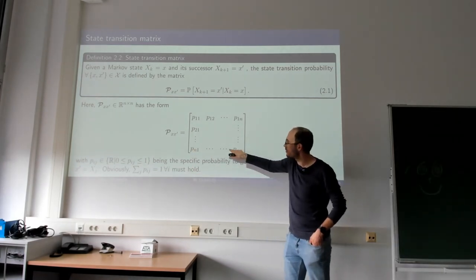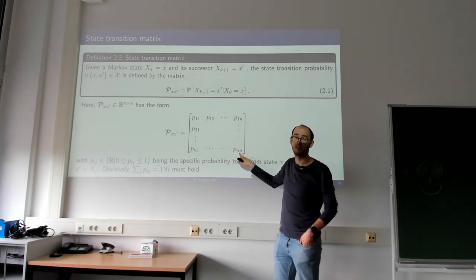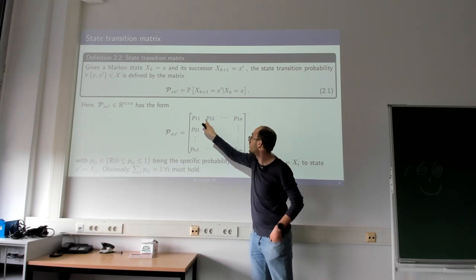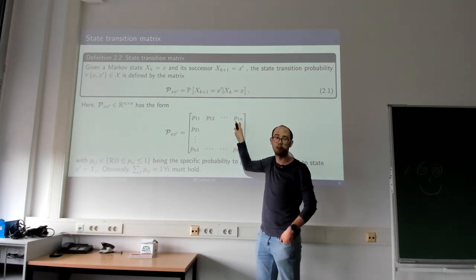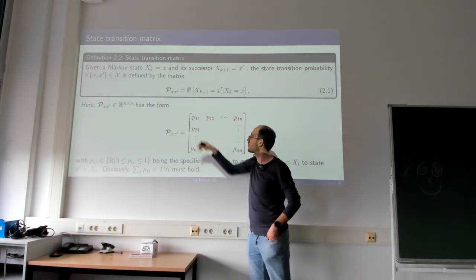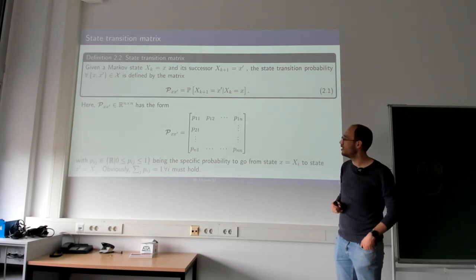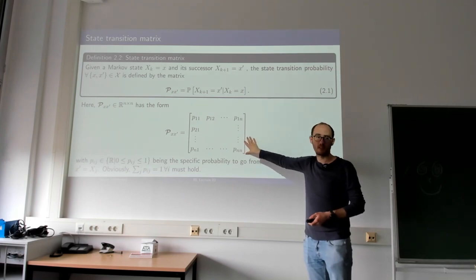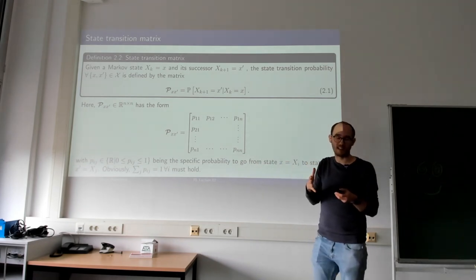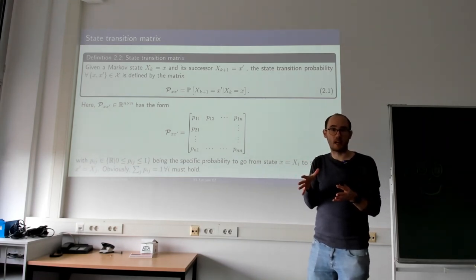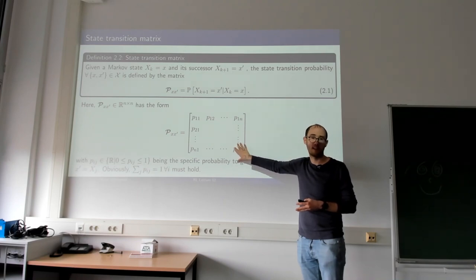This matrix can only be formed due to the limitations of a finite state space. If we had continuous states, we could not define such a matrix - we'd need continuous distributions. For obvious reasons, the elements of every row must sum to one, since the probabilities of transitioning to any state must be complete. The state transition probability matrix is very important for describing value and state-action value functions.